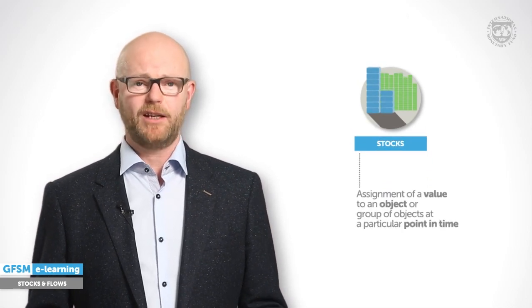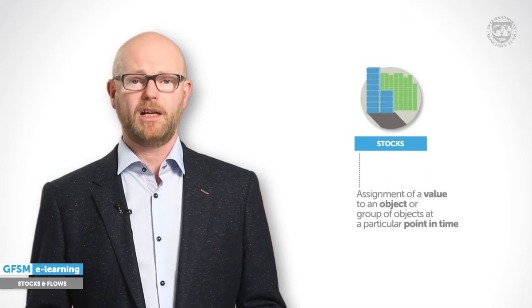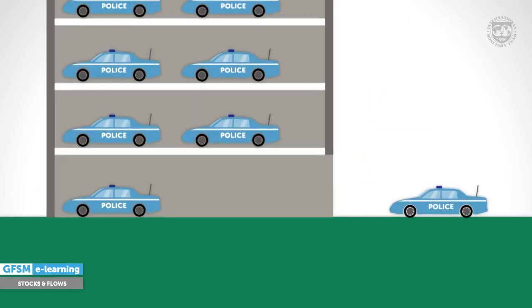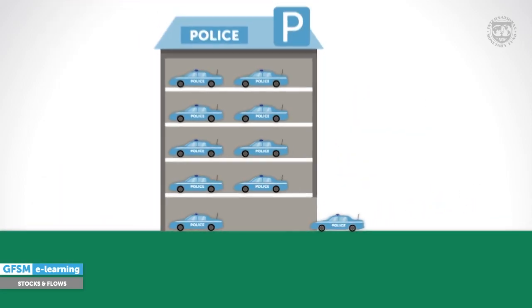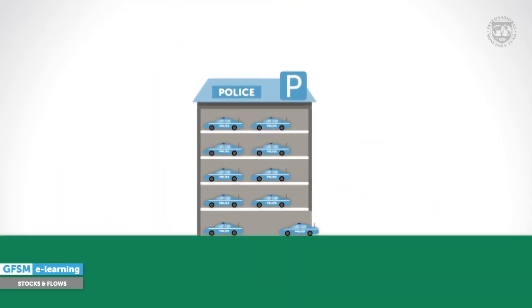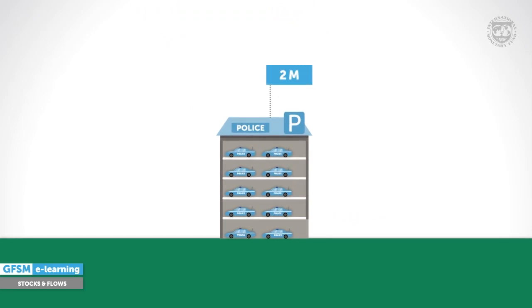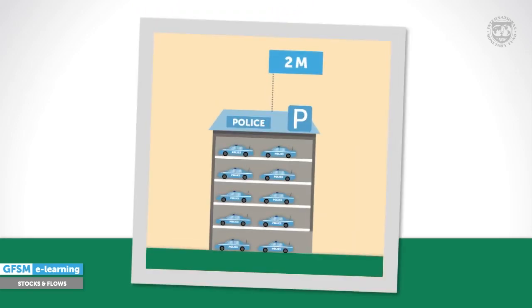What is a stock measure? Put simply, a stock measure shows the value of the government's possessions. It assigns a value to an object or group of objects at a particular point in time. In our example, a stock measure would show the value of the car fleet today. You could think of a stock measure as a snapshot photo that depicts the value of something at a specific moment — usually the end of a year, a quarter, or a month.